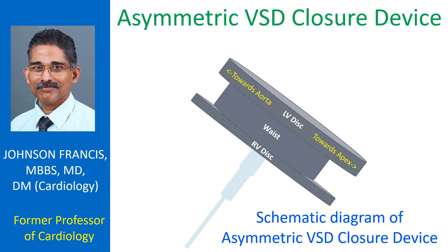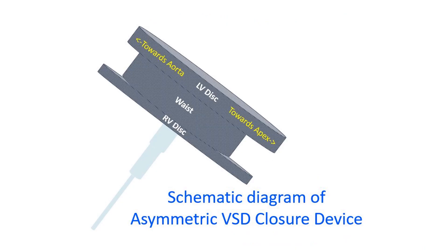An asymmetric VSD closure device has a left ventricular disc with a narrow flange towards the aortic side to reduce the chance of impinging on the aortic valve. The Amplatzer asymmetric ventricular septal defect occluder is one type. The left ventricular disc is typically 5 mm towards the left ventricular apex while it is only 0.5 mm towards the aorta. The connecting waist is 1.5 mm long and the right ventricular disc is 4 mm larger than the waist.